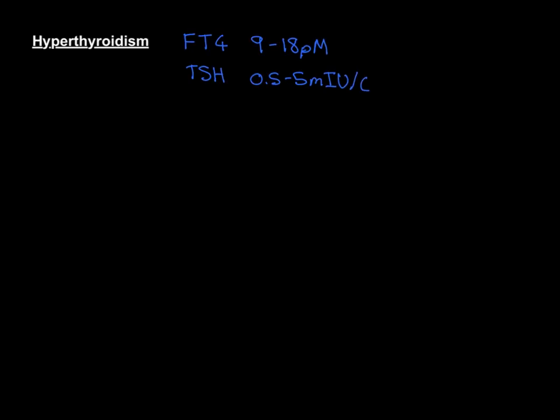In hyperthyroidism, fT4 is going to be too high — it's going to be greater than 18 picomolar. I've seen patients with fT4 levels up in the 40s and 50s. That's how high it can go.